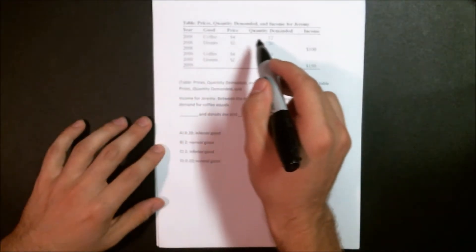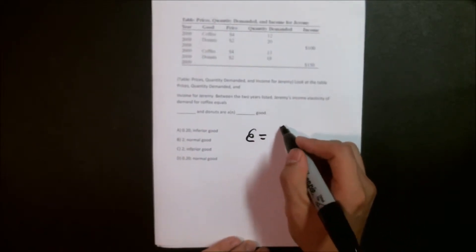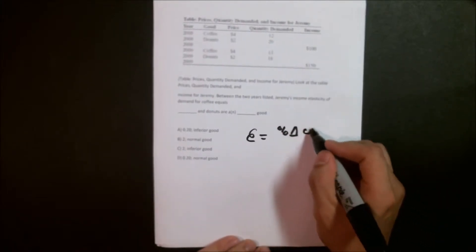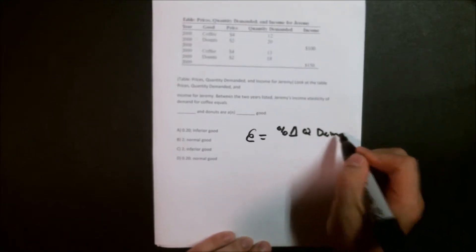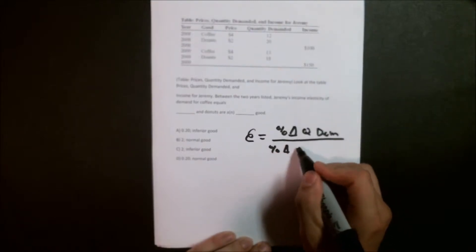The first thing here we need to realize is that we're dealing with coffee. So this information here is currently not that important. We're just looking at coffee for the moment. The first thing we're going to do after that is remember the equation for income elasticity. Income elasticity of demand is written as elasticity equals percentage change in quantity demanded over the percentage change in income.